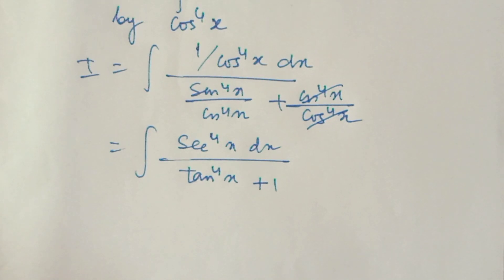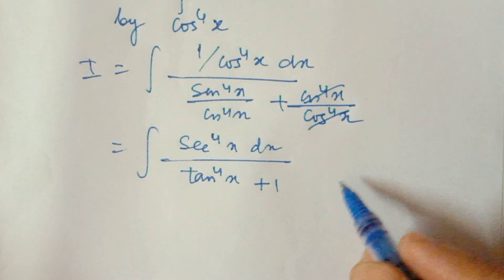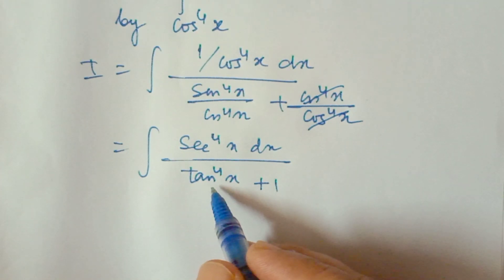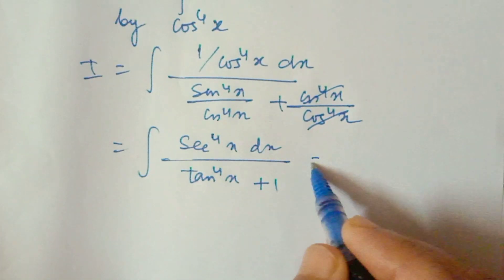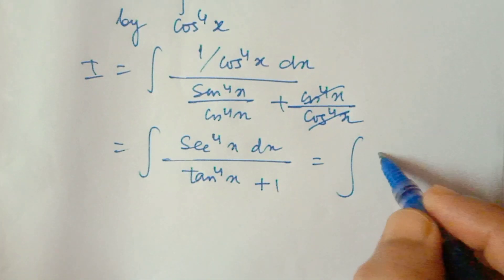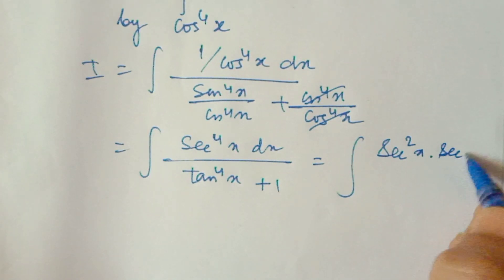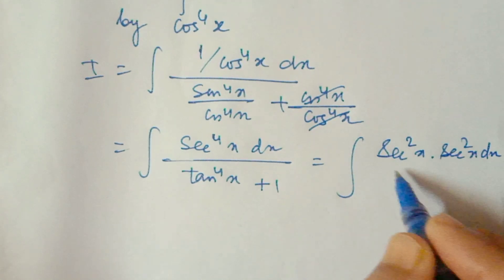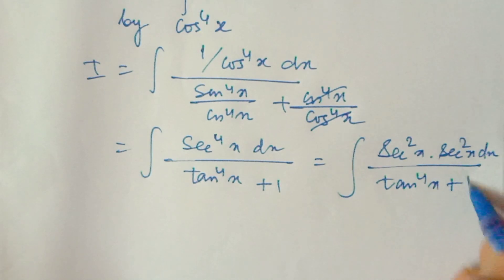We know that the differentiation of tan x is sec squared x. After dividing by cos to the power 4x, the numerator becomes sec to the power 4x, which is sec squared x times sec squared x dx, and the denominator becomes tan to the power 4x plus 1.